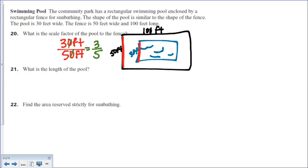All right, what is the length of the pool? Meaning it wants to know this. It wants to know the length of the pool. Well, if I know the scale factor is three to five, that's what we just found out, right? So three to five. So the pool is on top. We don't know the length of the pool, but do we know the length of the fence, where five comes from? Yes, it's a hundred, right?